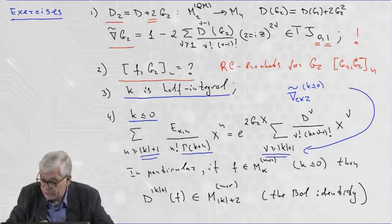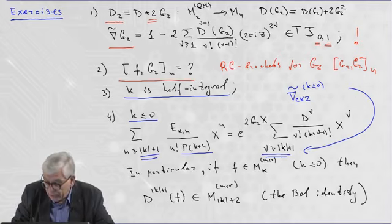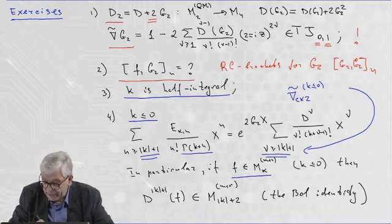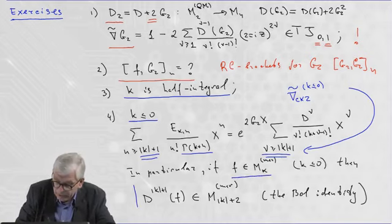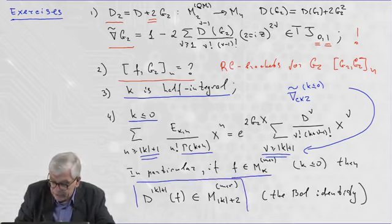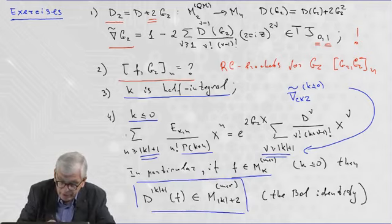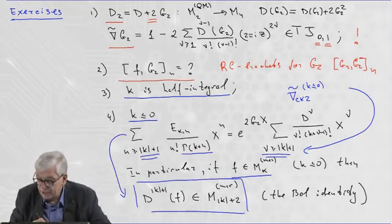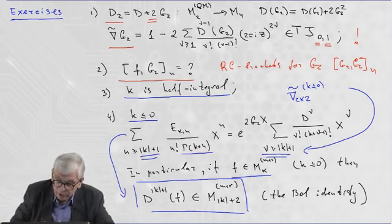In particular, from this formula, you see that for K less than or equal to zero, for any meromorphic modular form of weight K, we have the following identity. This is direct corollary from this identity.